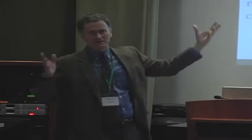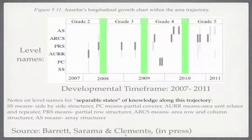I wanted to start right away with a product we've come up with. In our work, we tried to show what happened when we walked through four years of time with eight kids at one site and eight kids at another. The dark gray band is the dominant level, and the level names can be described. This is about understanding area — partial cover, area unit related repeater, partial rows structurer, area row and column structure, eventually array structurer. We're looking at that kind of thinking over this time frame, and we also see fallbacks and reaching ups, noted with those lines.